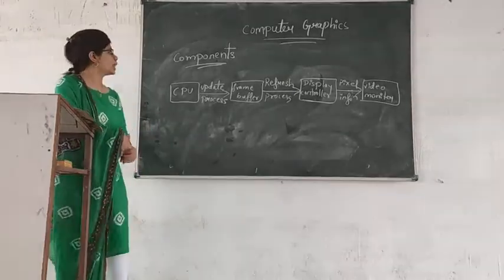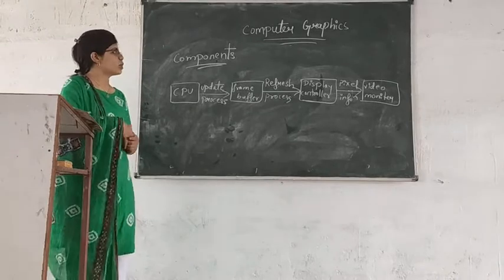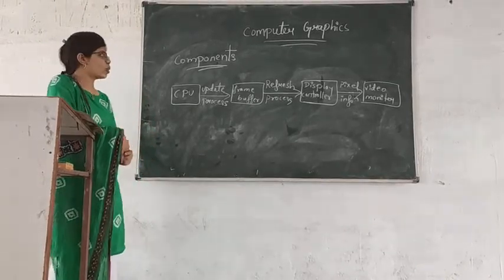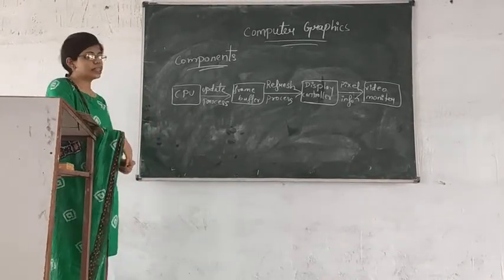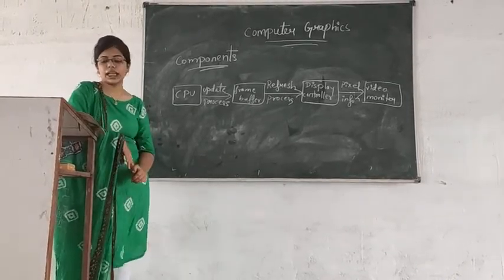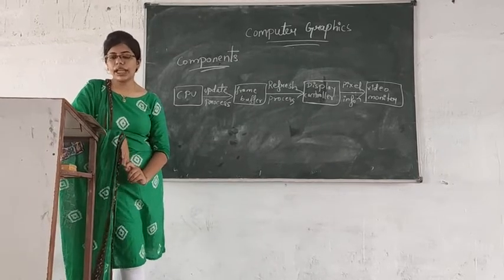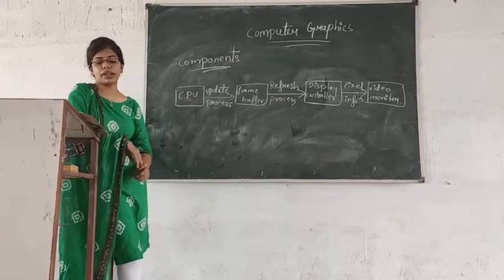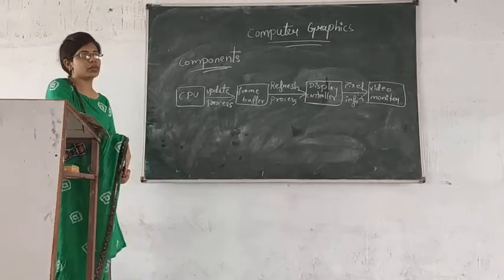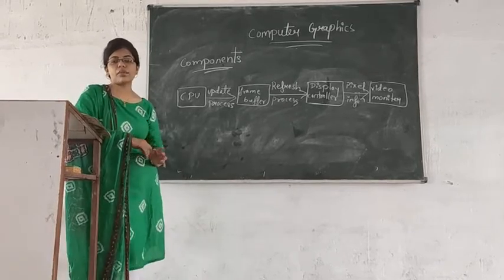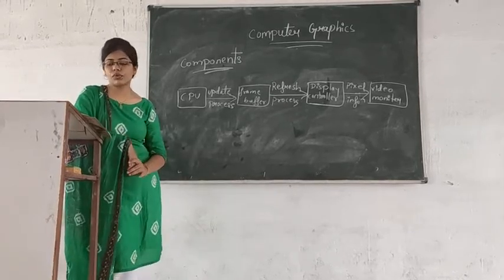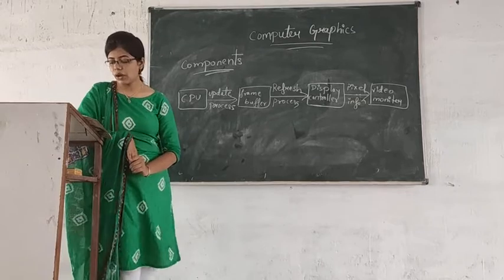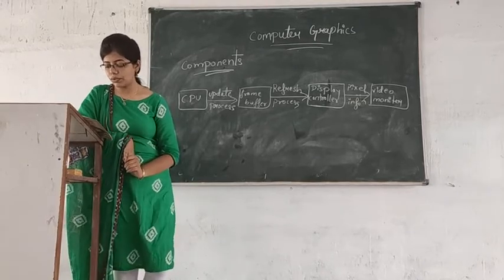Now, what are the components of computer graphics? The first is digital memory, the second is a TV monitor, and the third is a display controller. Digital memory is used as a frame buffer, which represents the image.